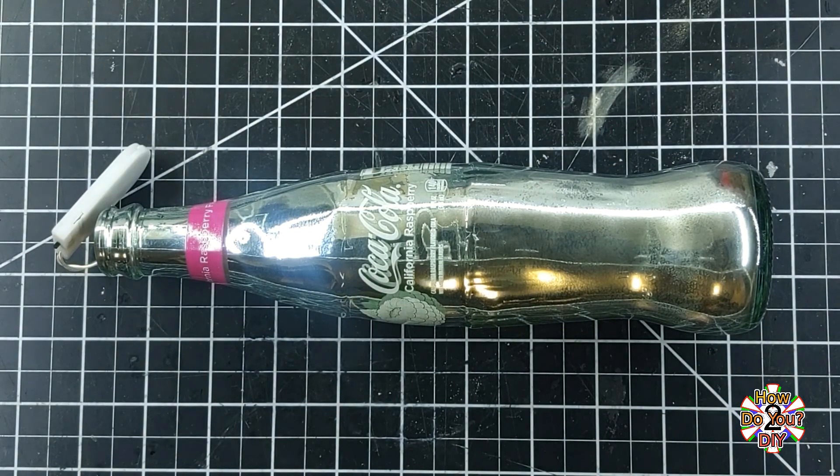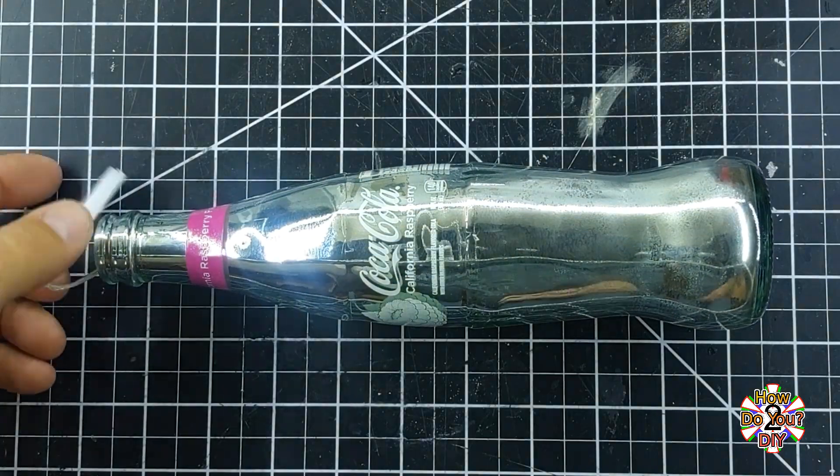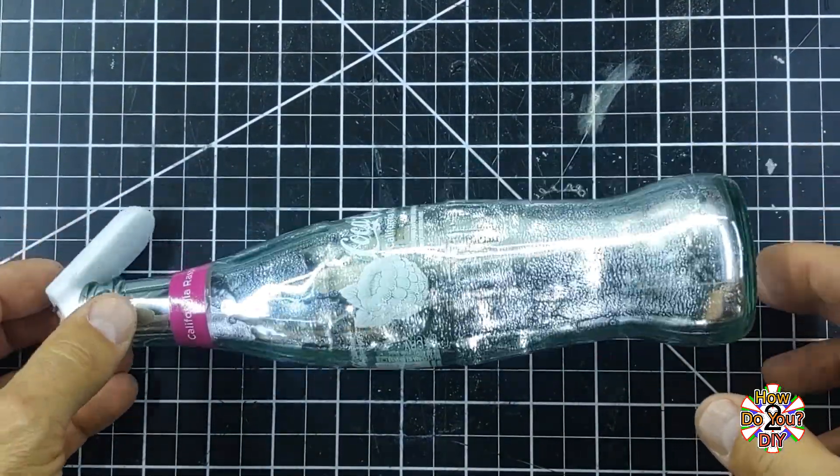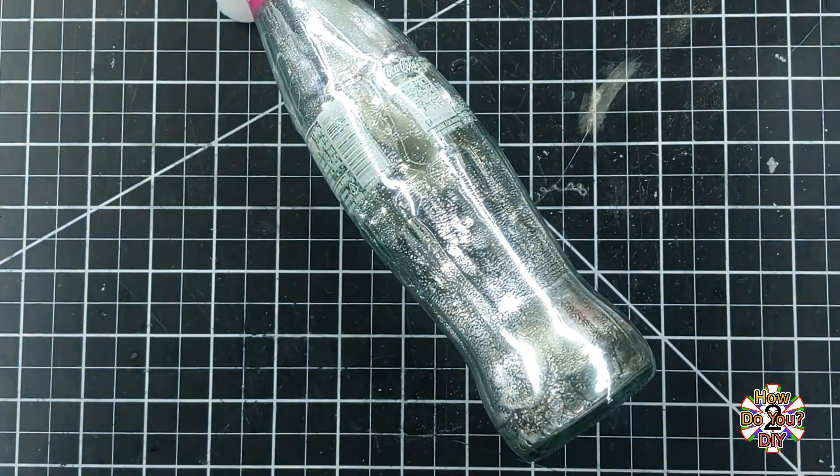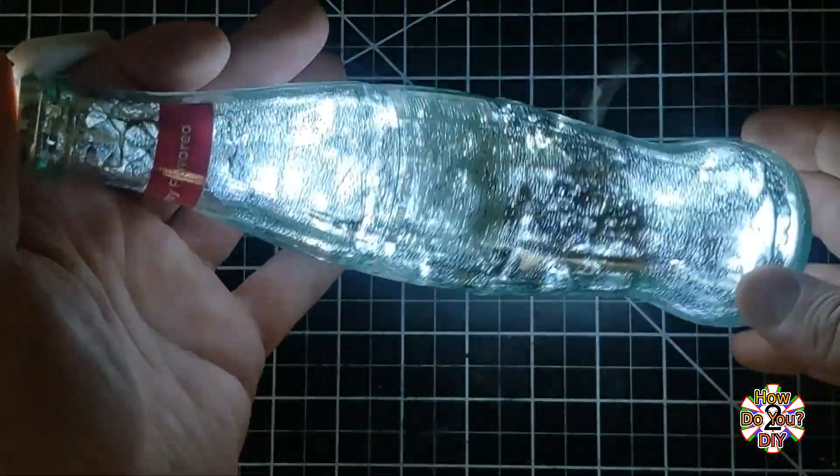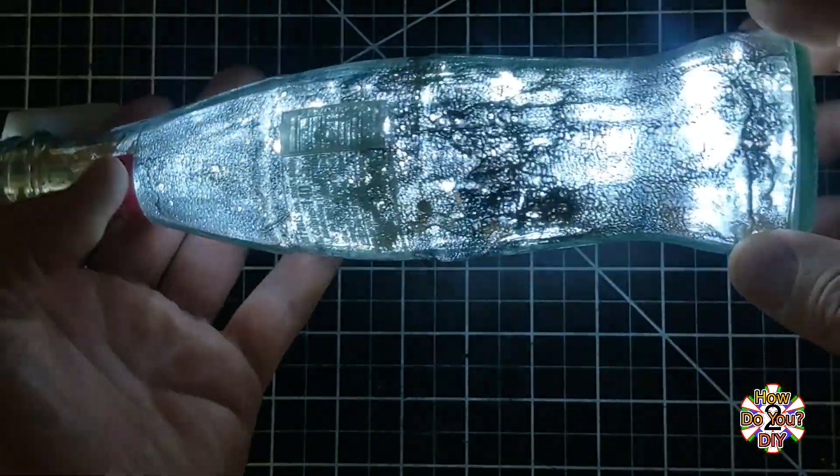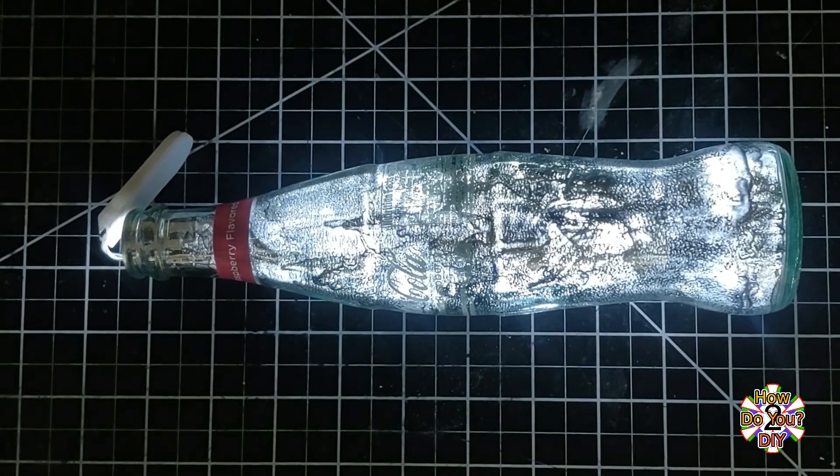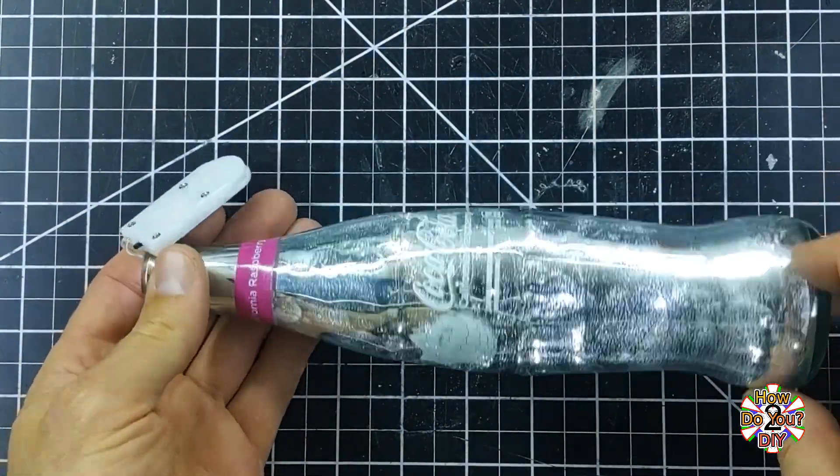After that was dried, I inserted a string of fairy lights and turned them on. With the inside lights on, it doesn't look like a mirror at all. The partial layer of paint is giving the bottle a dirty look. I think this is just how the paint is meant to be though.